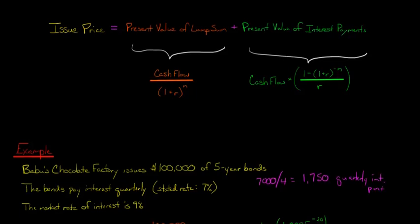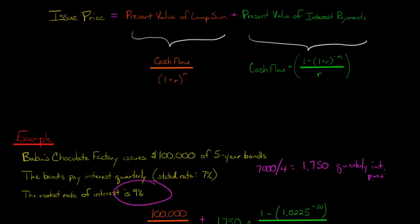Now we can look at the market rate of interest. The market rate of interest for similar bonds is 9%, so we've got to divide that by four too. So let's see here, 0.0225, which is 2.25%.